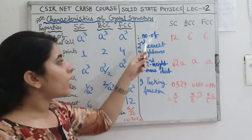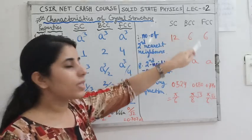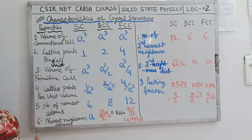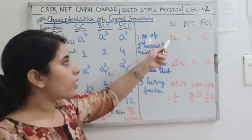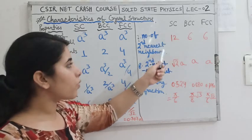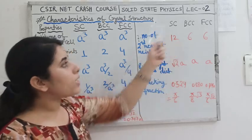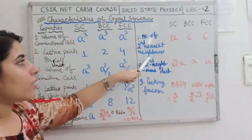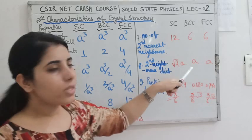The number of second nearest neighbors in simple cubic is 12, in body centered cubic is 6, and in face centered cubic is 6. The second nearest neighbor distance for simple cubic is √2·A, for body centered cubic is A, and for face centered cubic is also A. Note that BCC and FCC both have 6 second nearest neighbors at the same distance A.